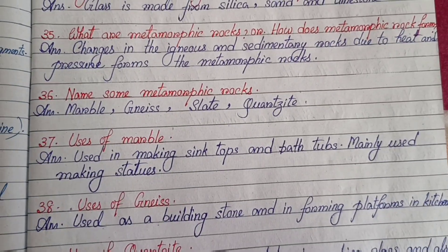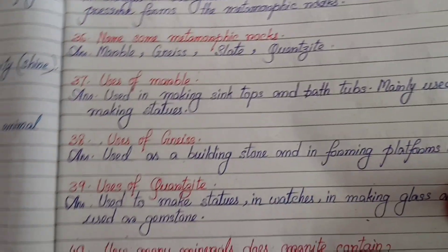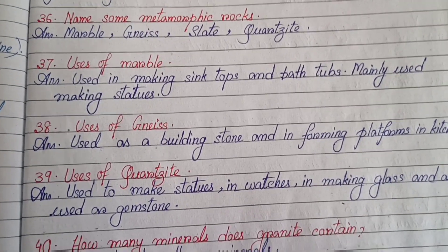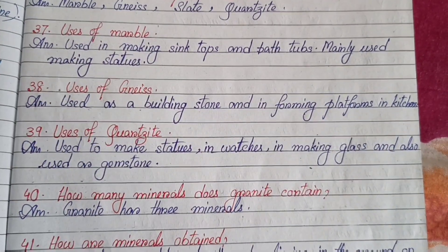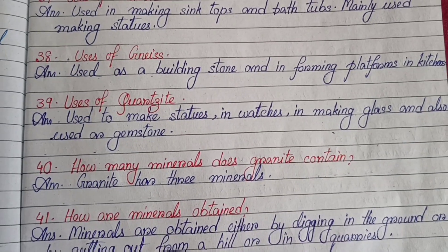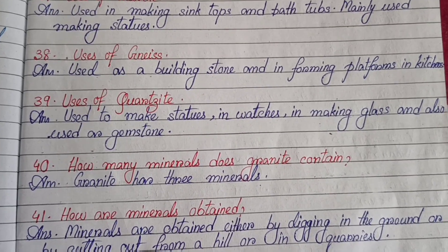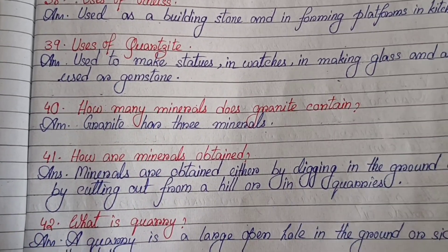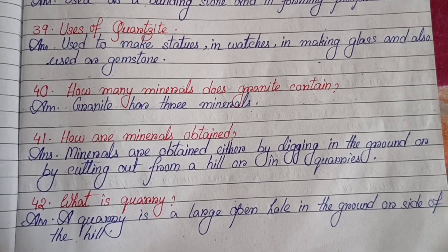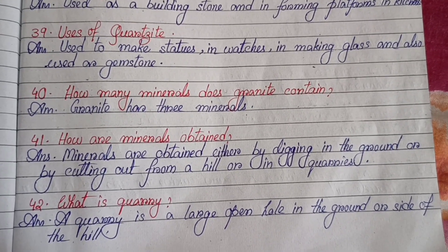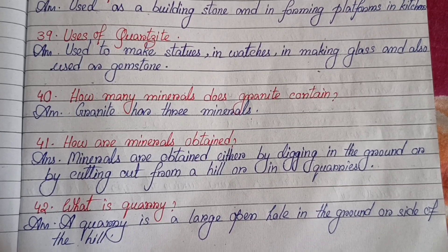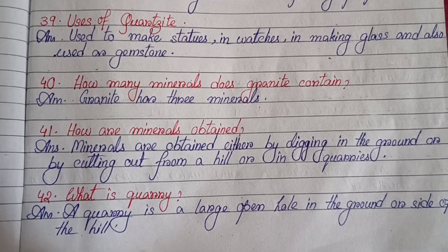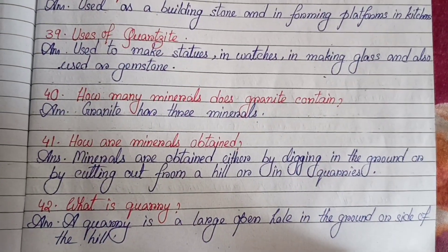Uses of marble: used in making sink tops and bathtubs, mainly used in making statues. Uses of gneiss: used as a building stone and in forming platforms and kitchens. Uses of quartzite: used to make statues, in watches, in making glass, and also used as gemstone. How many minerals does granite contain? Granite has three minerals. How are minerals obtained? Minerals are obtained either by digging in the ground or by cutting out from a hill or in quarries. What is a quarry? A quarry is a large open hole in the ground or side of a hill.